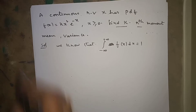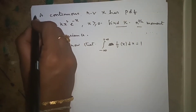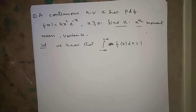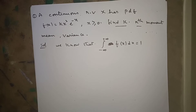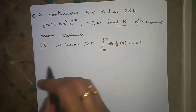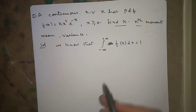Hello everyone. Today I am going to explain the next problem in continuous random variables. A continuous random variable x has a PDF f(x) equal to k·x²·e^(-x) for x ≥ 0. We need to find k, the rth moment, mean, and variance.